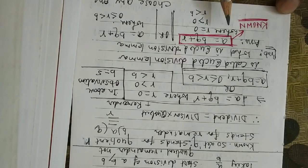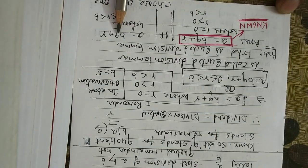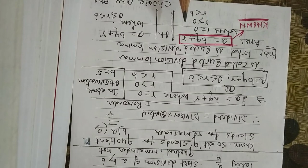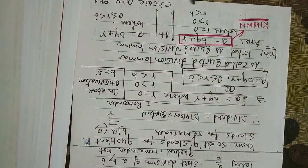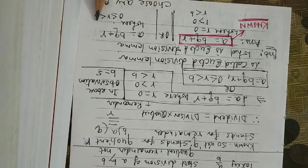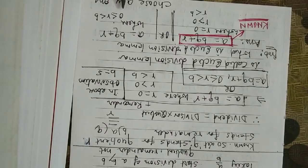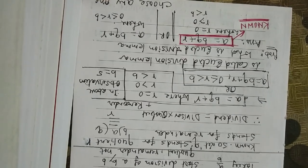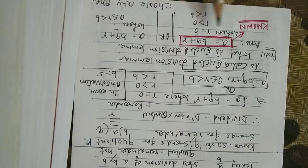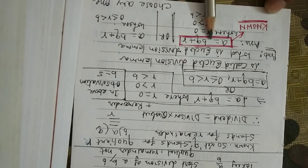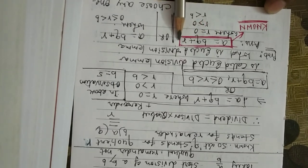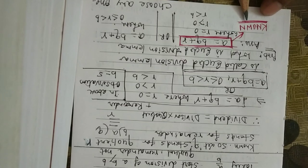Problem number 1: What is Euclid's Division Lemma? Answer: A is equal to BQ plus R, where R equals 0, R is more than 0, and R is less than B. Or your answer may be written as: A = BQ + R, where 0 is less than or equal to R, and R is less than B. Choose any one of them. Know this formula permanently.